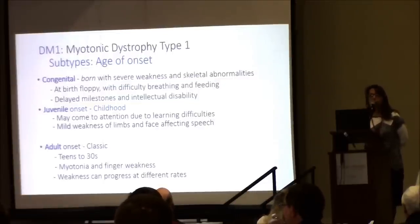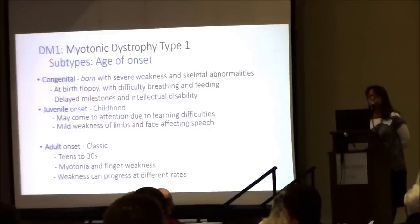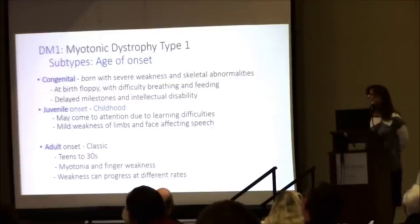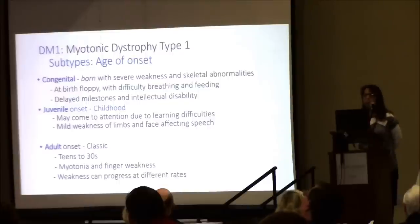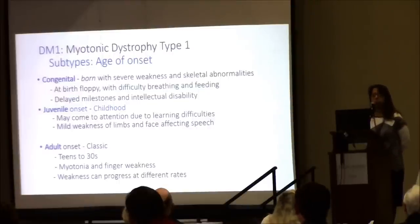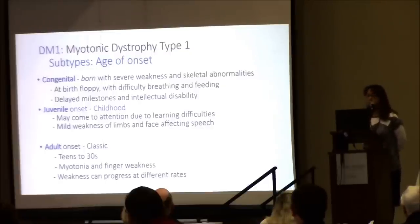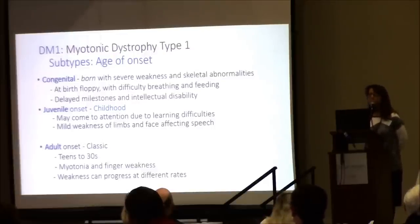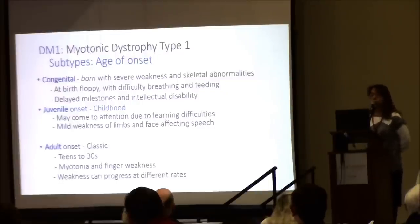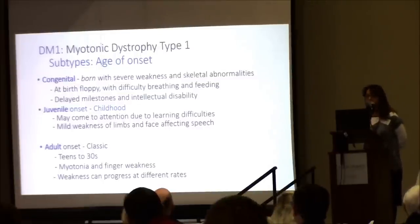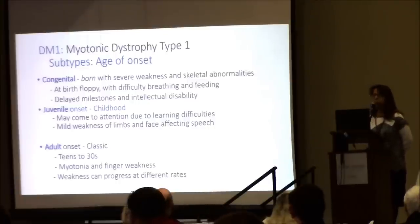Myotonic dystrophy type 1 can present as congenital, at birth, in childhood, or in adulthood. Those born with it — the congenital form — have the most severe presentation. These babies are born very floppy, have difficulty breathing and feeding due to facial weakness, may have club foot or other skeletal abnormalities. If they survive the neonatal period they usually stabilize and can walk, though motor milestones may be delayed, and they have intellectual disability. Children who present with myotonic dystrophy often come to attention because of difficulty at school with learning, attention, or behavior issues.